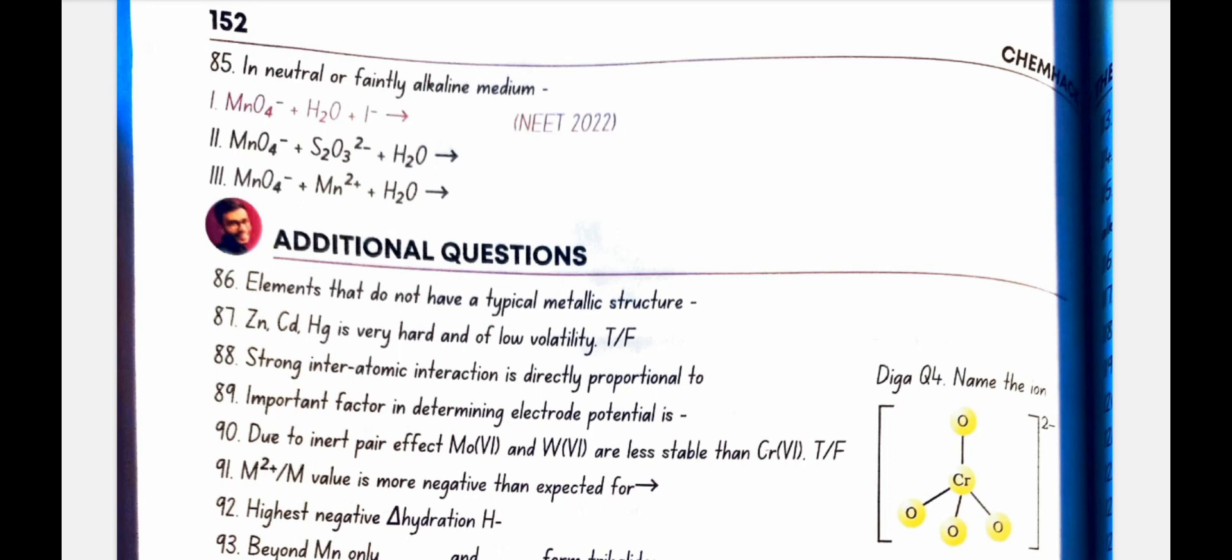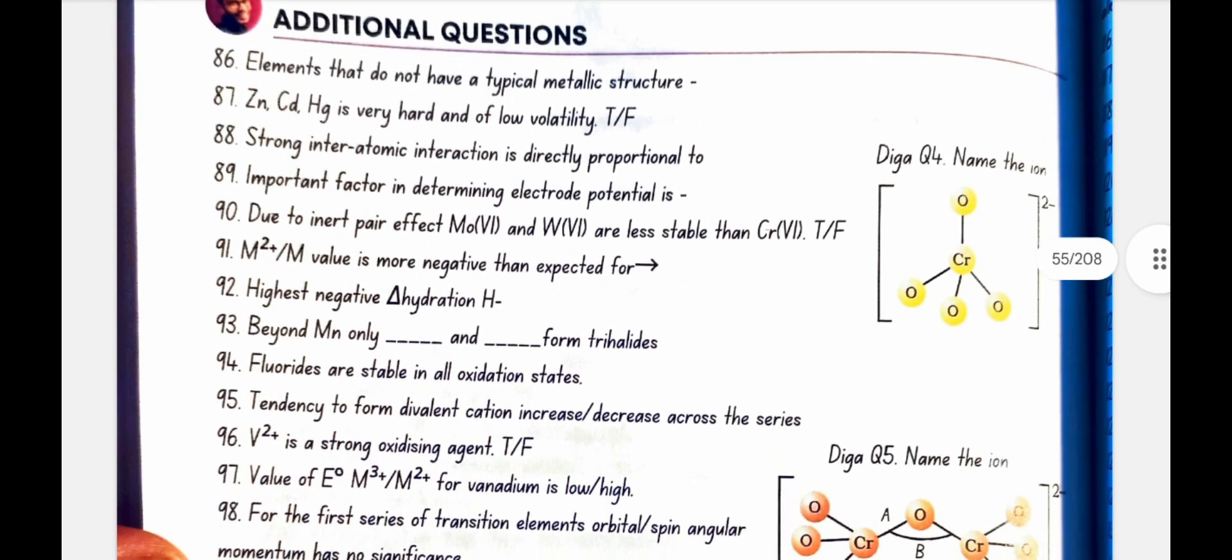Additional questions. Elements that do not have a typical metallic structure. ZnCdHgMn. ZnCdHg is very hard and of low volatility. No, false.